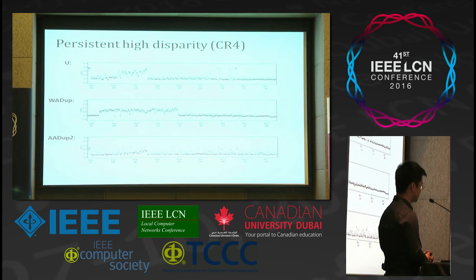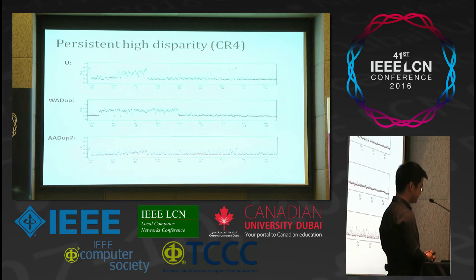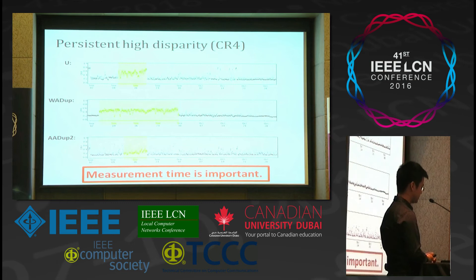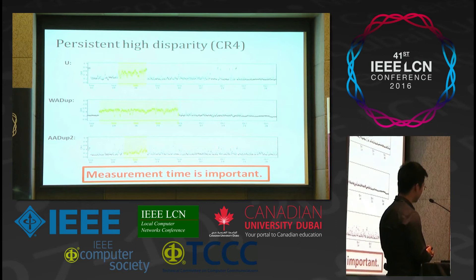Another interesting question is whether high disparity persists. We show the example of CR4 — the contribution of the top four monitors — for three features: update, WADIF, and ADUP2, over a two-month period. We can see clearly that high disparity may remain for quite a long time. For example, in the second figure, high disparity persists for more than 20 days. Our suggestion is that when one uses aggregated data to measure BGP, they should be careful about the time period chosen, because the data may be dominated by only a few monitors.